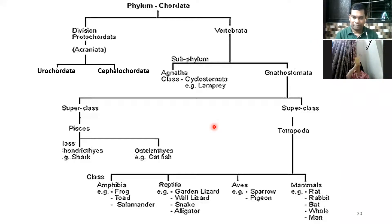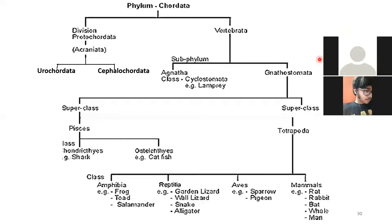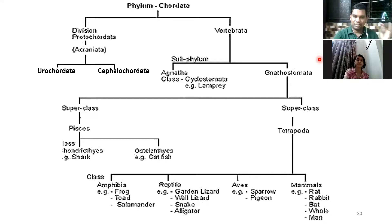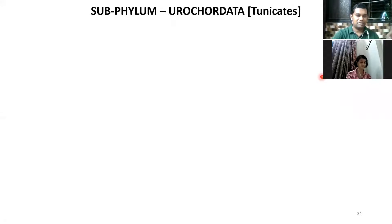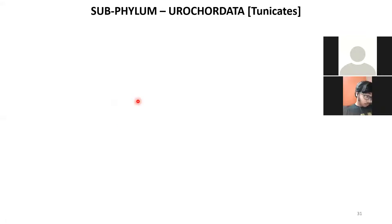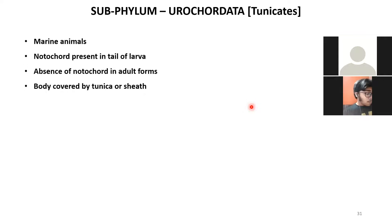Let's continue with Phylum Chordata. At the beginning of this lesson we saw the differences between chordates and non-chordates, with respect to notochord, pharyngeal gill slits, and the heart. Under Chordata, we will begin with Sub-Phylum Urochordata. These animals are commonly known as tunicates, and among the higher animals, these are the most primitive ones.